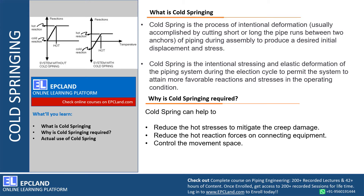So what we are doing is intentionally inducing the deformation with respect to displacement and stress. Indirectly, we can say cold springing is an intentional stressing and elastic deformation of a piping system during its direction cycle, to permit the system to attain favorable reaction. We want to have some stresses inside the system so that when there are reactions during operation, these can be utilized to reduce the negative impact.